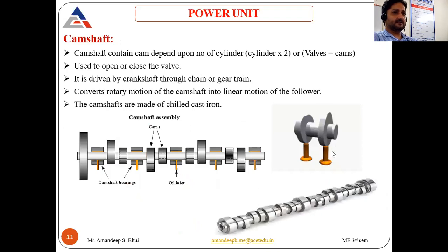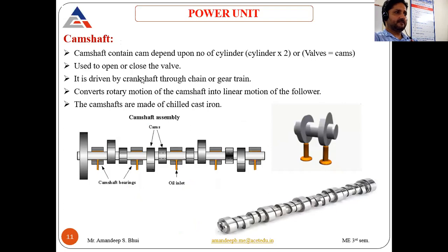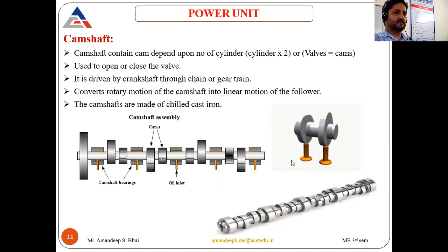The camshaft contains cams that open and close the valves inside the cylinder. It is driven by the crankshaft via a timing belt connected to pulleys. The camshaft converts the rotary motion from the crankshaft into linear motion of the follower — in this case, the inlet and exhaust valves. Camshafts are made of chilled cast iron.